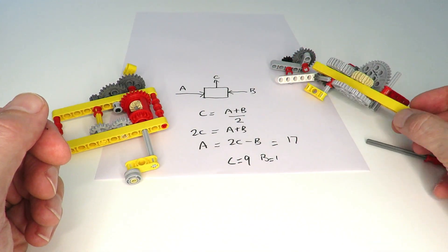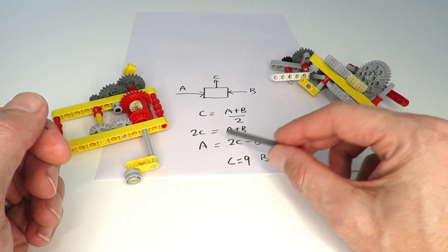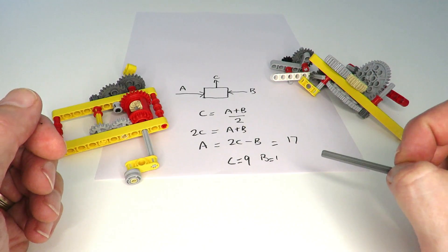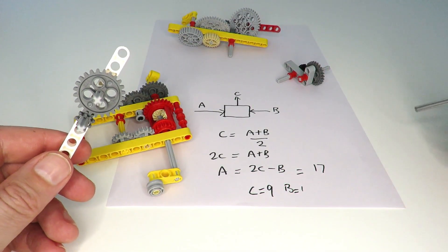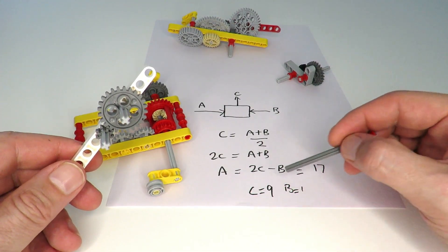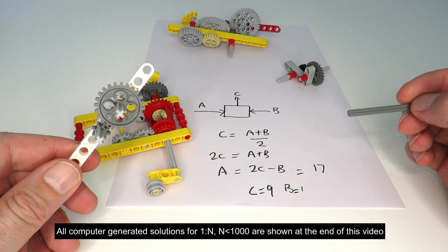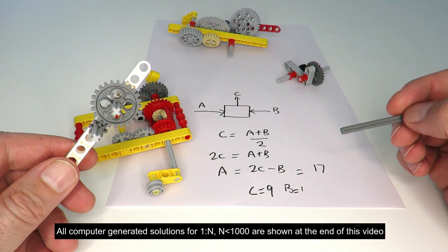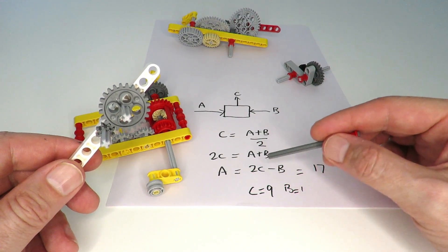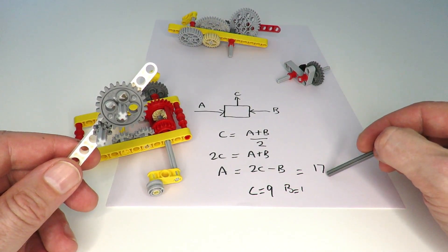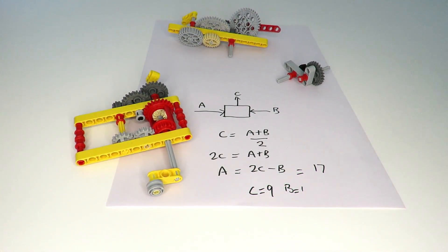I wrote a computer program that tried every combination of C and B that met the constraint of them being multiples of the Lego prime ratios — two, three, five, and seven — and also met the constraint that 2C minus B equals the desired prime ratio. I've got the results here for A equals 17.